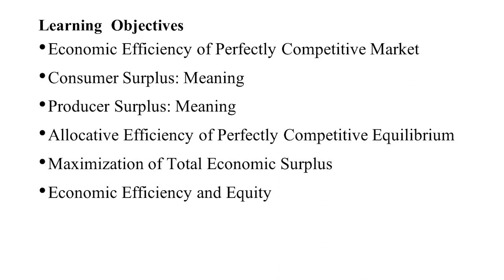We have discussed those topics earlier. Today the topic we are going to discuss in detail includes: what is consumer surplus, what is producer surplus, how economic efficiency of a perfectly competitive market works, and what is allocative efficiency of perfectly competitive equilibrium. Then we have maximization of total economic surplus and economic efficiency and equity.